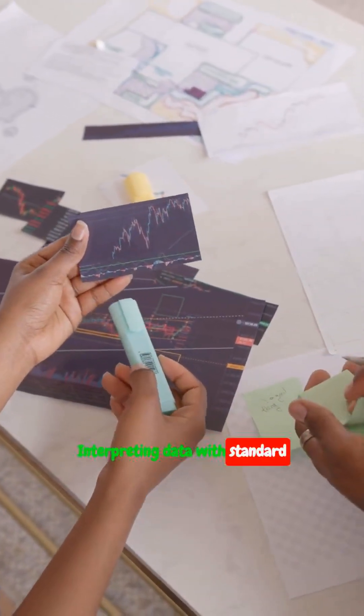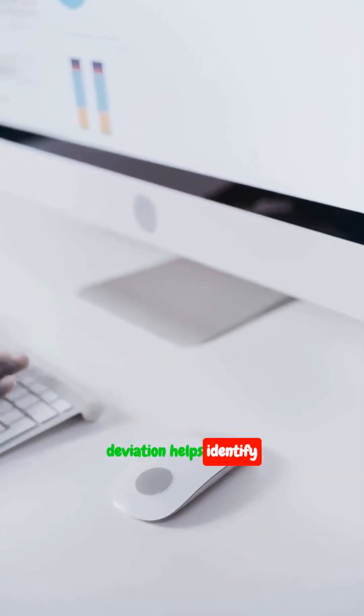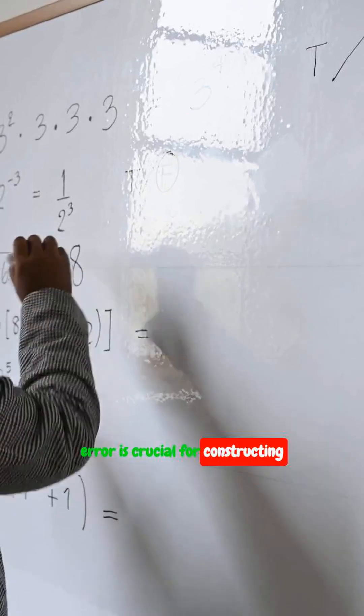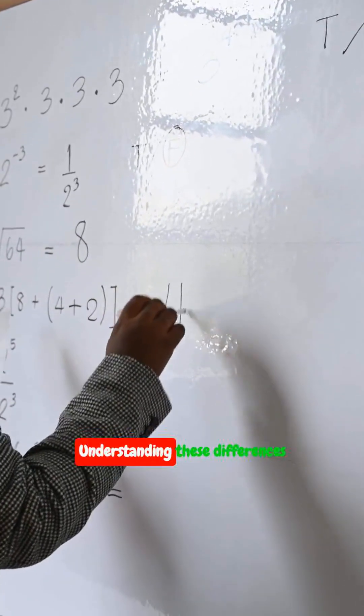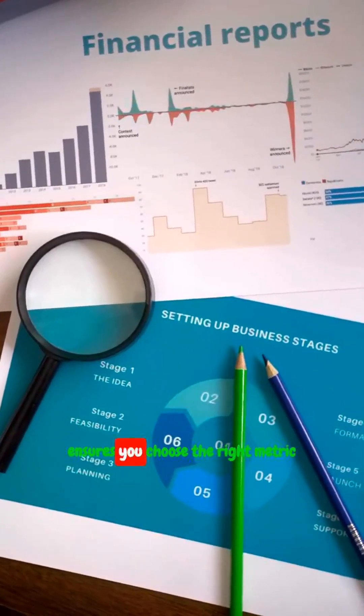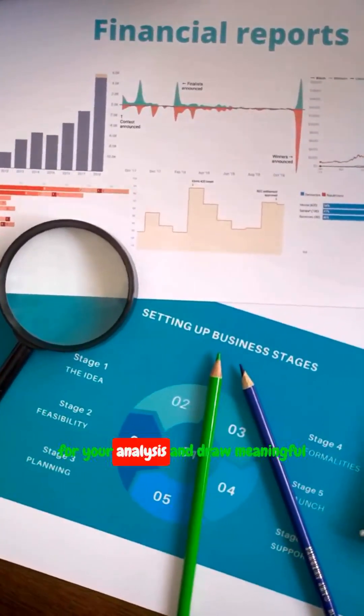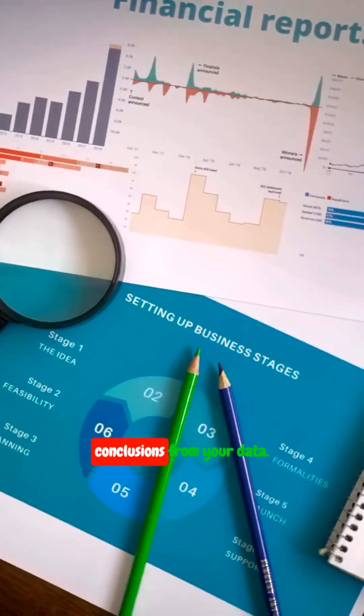Interpreting data with standard deviation helps identify patterns or outliers, while standard error is crucial for constructing confidence intervals and conducting hypothesis tests. Understanding these differences ensures you choose the right metric for your analysis and draw meaningful conclusions from your data.